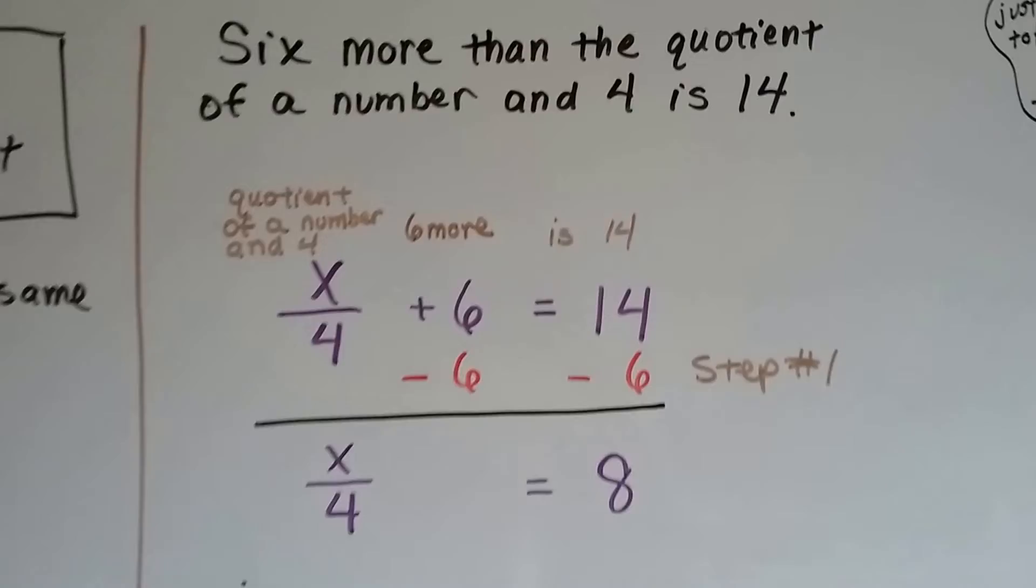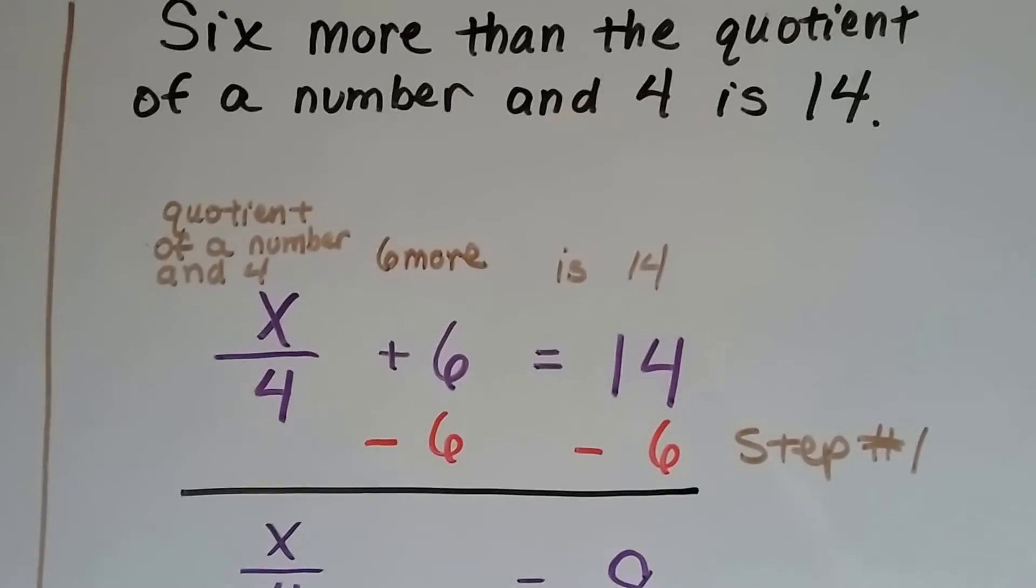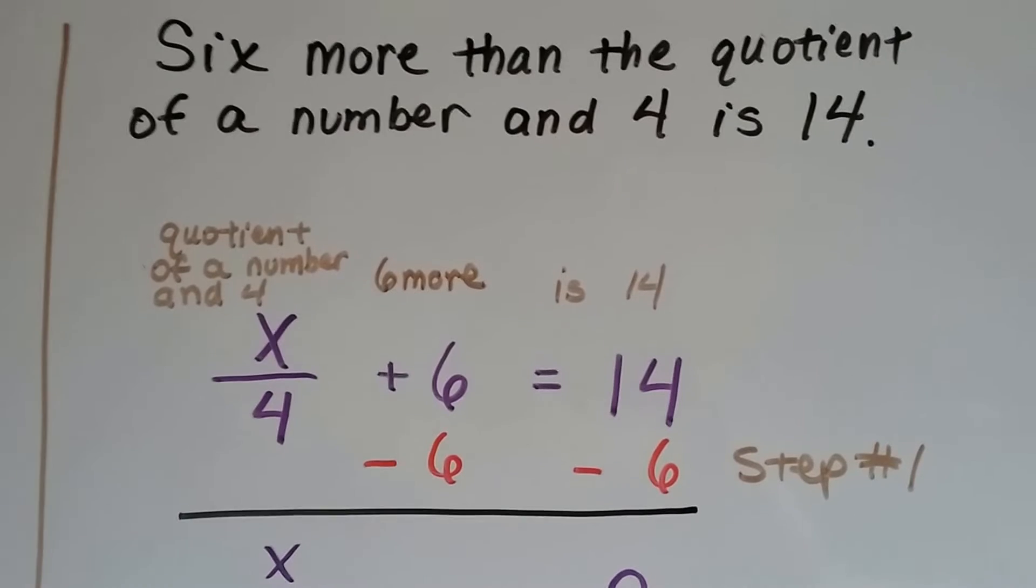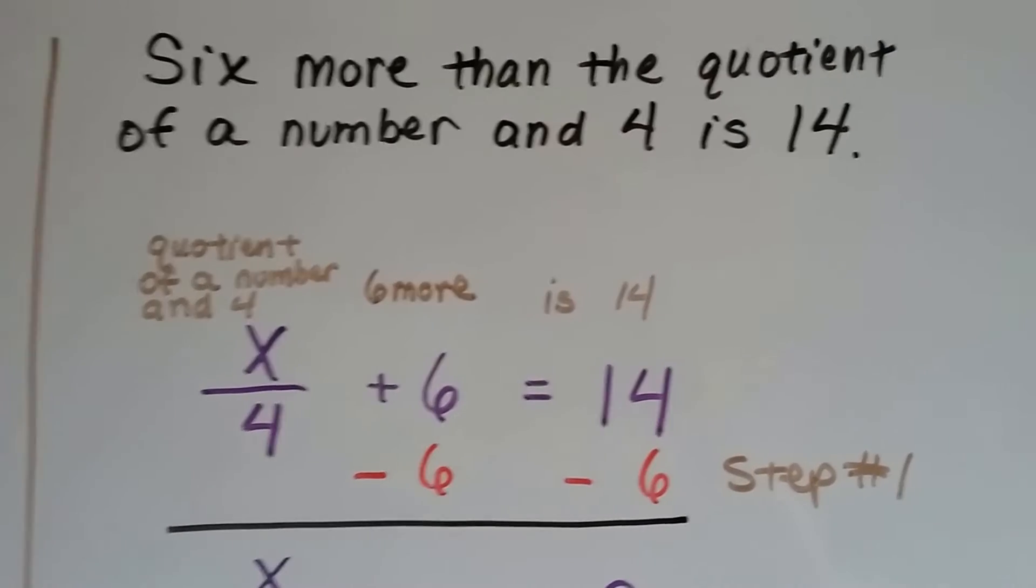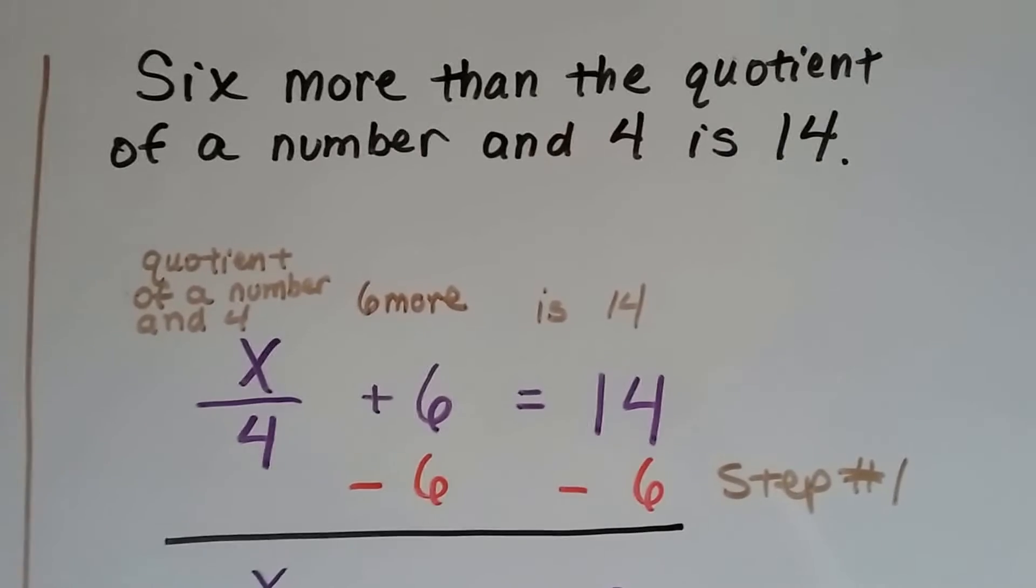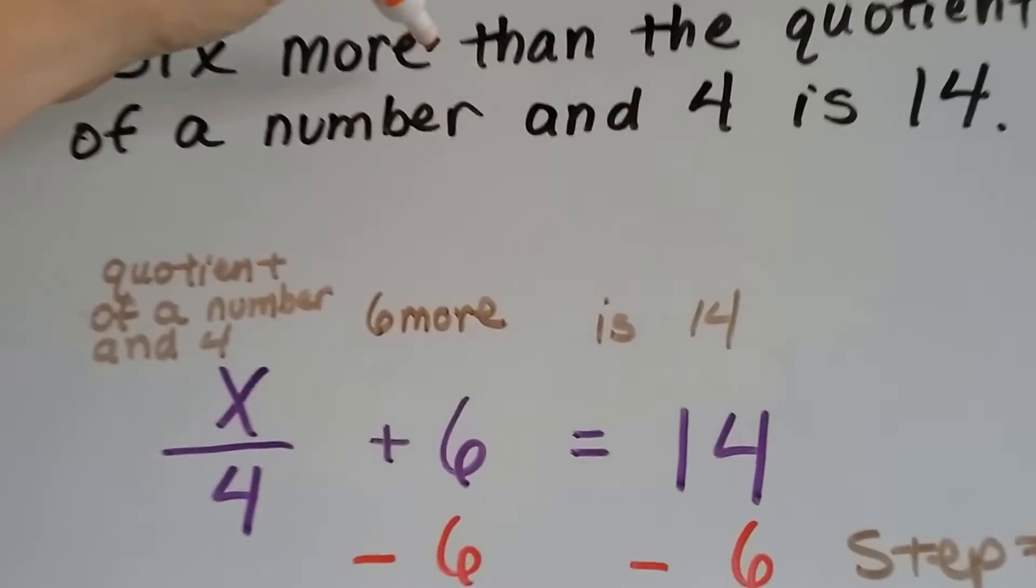Here's one that's a little bit tougher. So I need you to pay close attention. 6 more than the quotient of a number and 4 is 14. What does that mean? Well, 6 more means plus 6. So we know this part already.